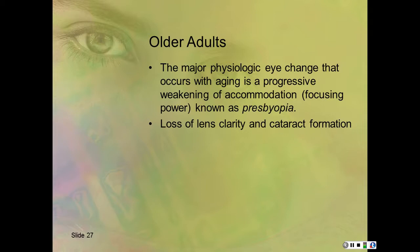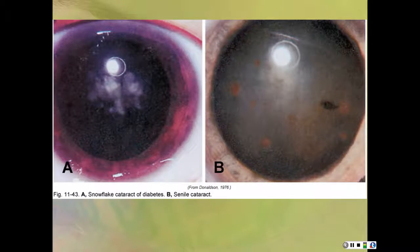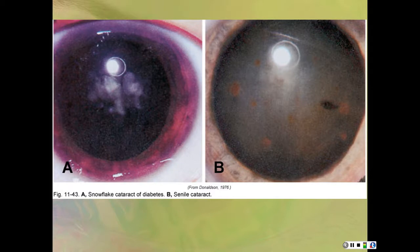In older adults, the biggest issue is lack of accommodation and focusing power, known as presbyopia. Seeing objects near and then far—like reading street signs—becomes harder and harder. There is also a loss of lens clarity and cataract formation. A snowflake cataract is common with diabetes and looks like snowflakes in the middle of the pupil, while a senile cataract presents as a very clouded lens.